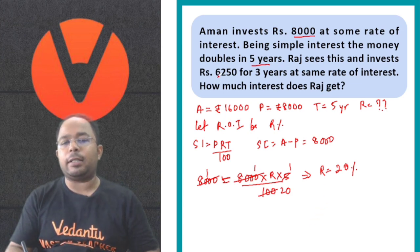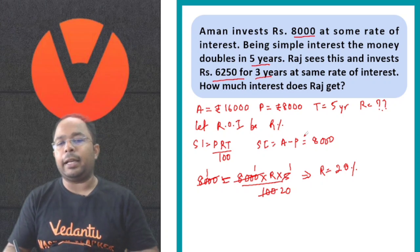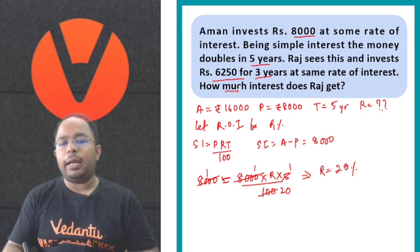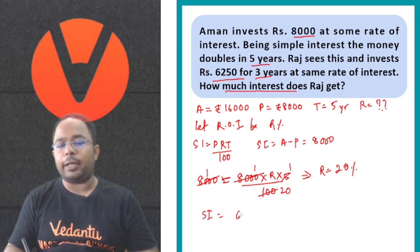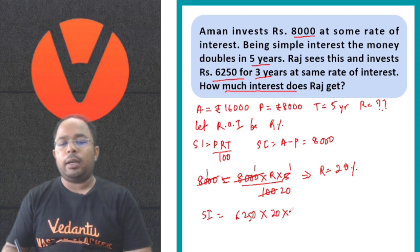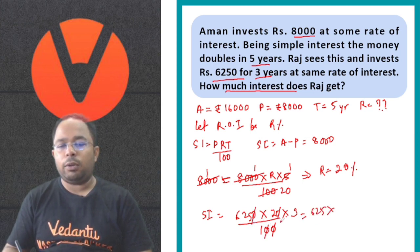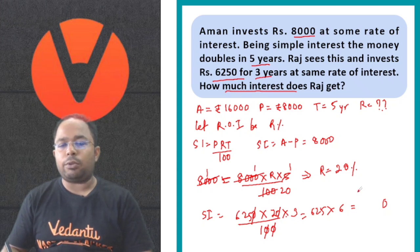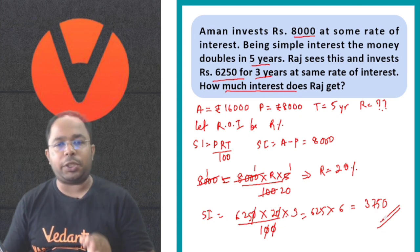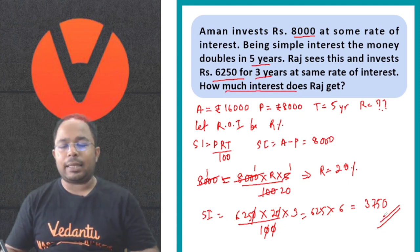Now, Raj invested Rs. 6,250 for 3 years at this same rate of interest of 20%. So Simple Interest = 6,250 × 20 × 3 / 100. Cancelling zeros: 625 × 3 × 2 = 3,750. So Rs. 3,750 is the interest that Raj will get.